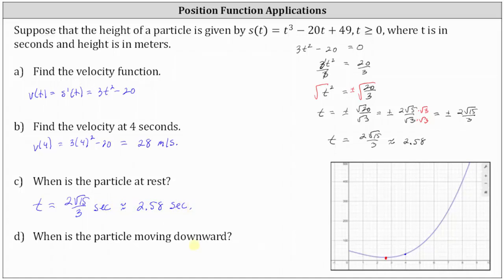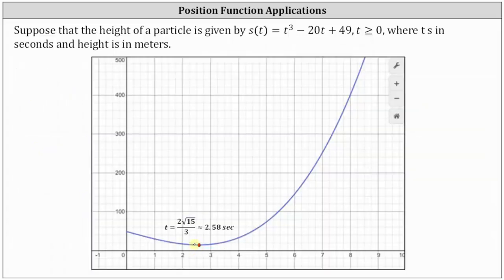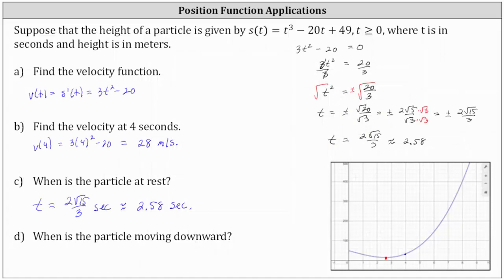For part d, we're asked when is the particle moving downward. We just found the point on the position function where the velocity is equal to zero. Where the position function is decreasing, or where the velocity is negative, is when the particle is moving downward. The function is decreasing over the interval from t equals zero to t equals two square root 15 divided by three, where we include zero and don't include the endpoint. Tangent lines over this interval would have negative slopes, indicating the velocity is negative. So the particle is moving downward over the interval zero to two square root 15 divided by three, using a square bracket on the left and a rounded parenthesis on the right, in seconds.